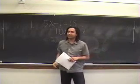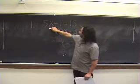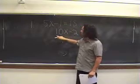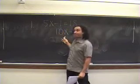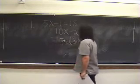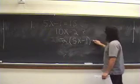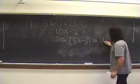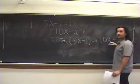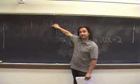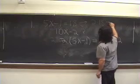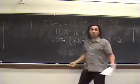Well, maybe not simpler, but a little sneakier. If I look at the left-hand side, I see this is 5x minus 1. 10x minus 2 is just twice that, because 2 times 5x minus 1 equals 10x minus 2. So if this is just twice this, then our answer must be 2 times 18, which is 36.